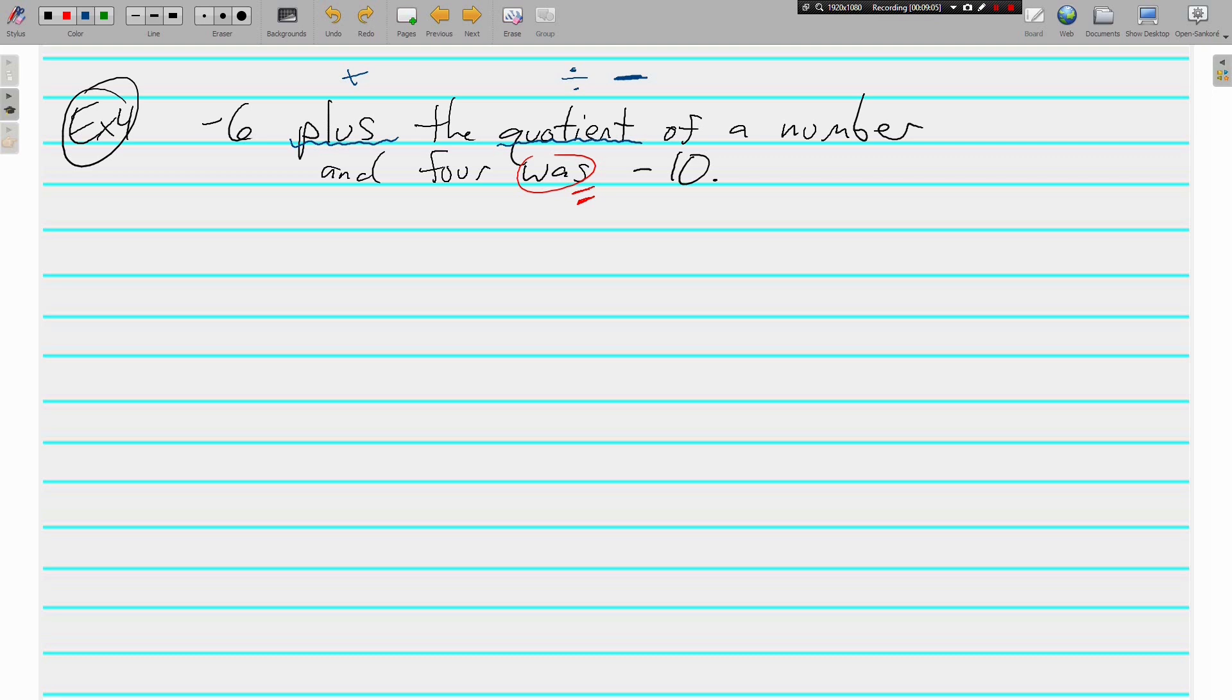Negative six plus the quotient of a number and four was negative ten. So I've got a negative six. I've got a number. I've got four. And I've got negative ten. So it was negative ten. That's the easy part. Negative six plus the quotient. Because it's plus the quotient and not just plus a number, it means I have to find that quotient first. The quotient of a number and four.